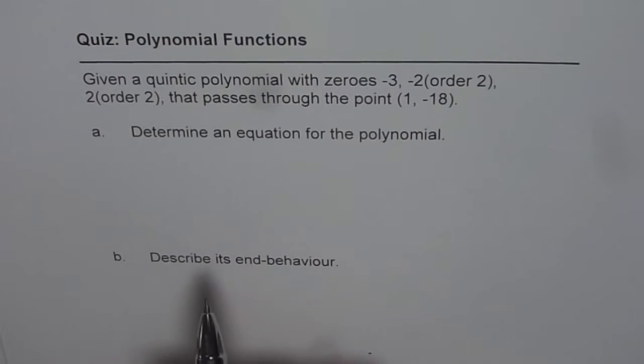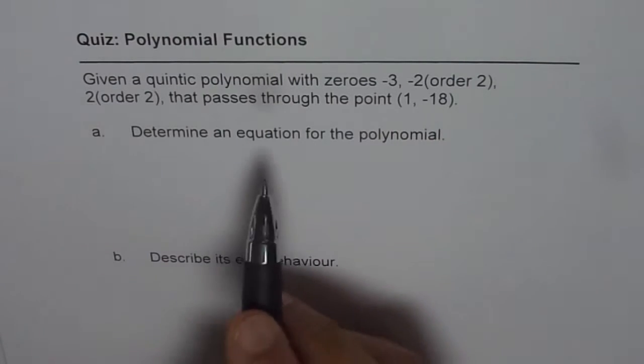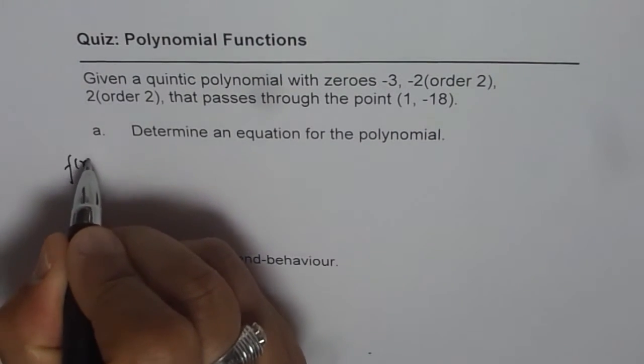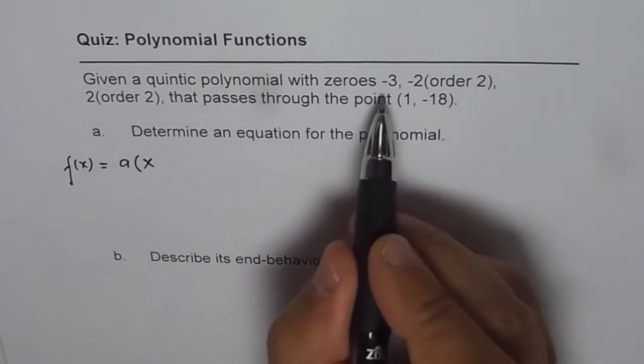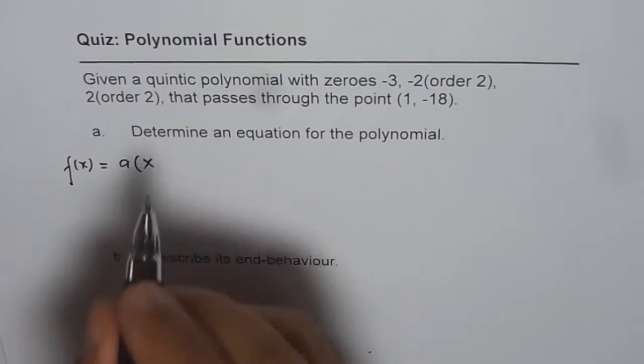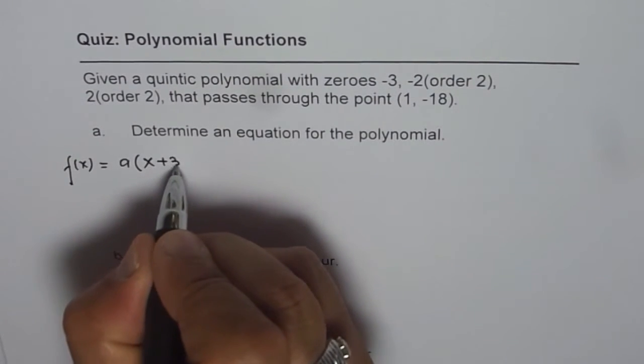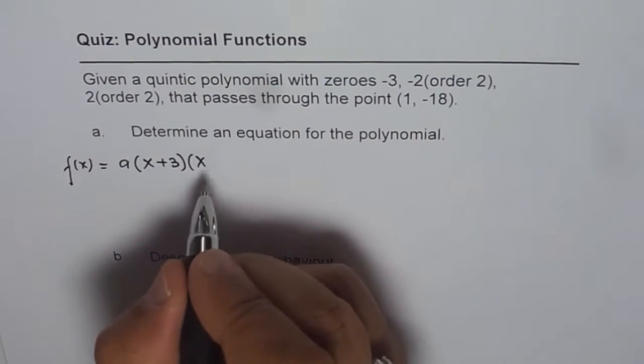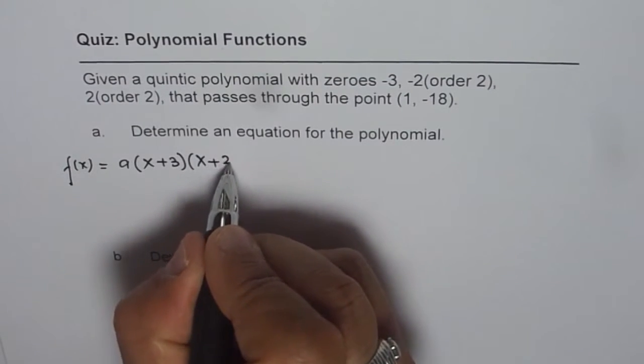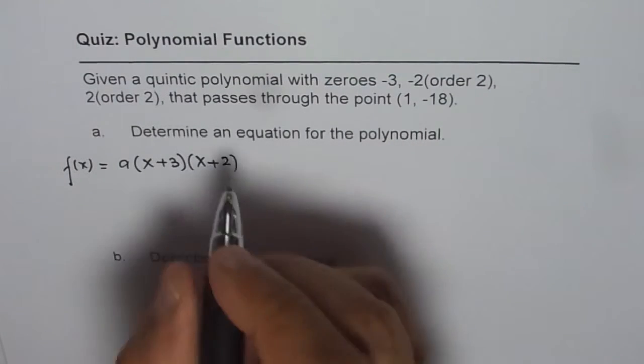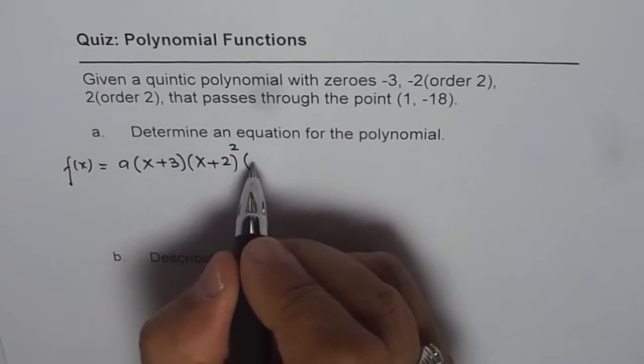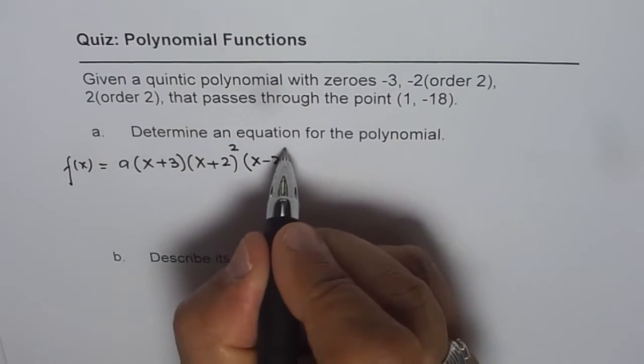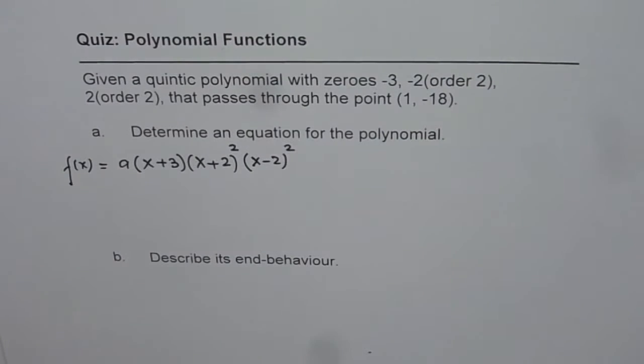So let us start with finding the equation of this polynomial. The function f(x) should be equal to a times (x minus the first zero, which is minus 3, that makes it x plus 3) times (x minus the other zero, which is minus of minus 2). Since it is order 2, we will put a square here. And then the next zero, which is (x minus 2) of order 2. So that becomes the equation of this quintic polynomial.